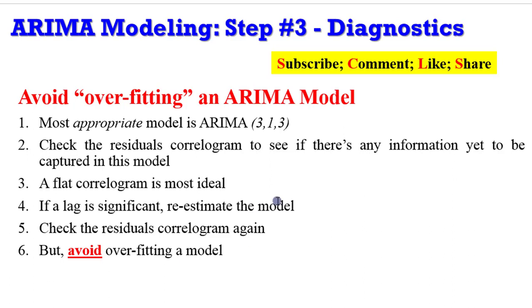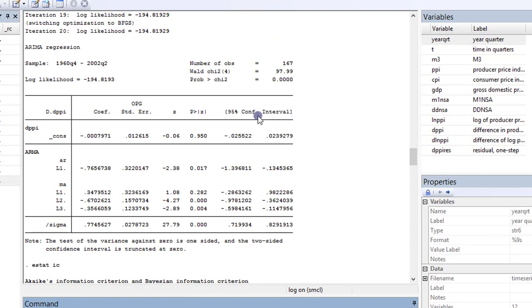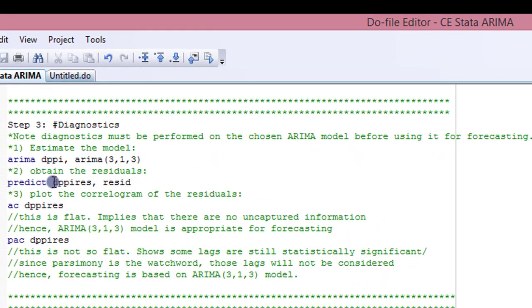So let's go to Stata to see how we can perform diagnostics on the chosen ARIMA 3,1,3 model. Remember, we are still using the data we obtained from Annie Kachova's Econometrics Academy. The data is here. You can see it in the variables section. The log file is still on, tracking everything we've done. And the code I'll be executing under diagnostics are all written out here in the do file.